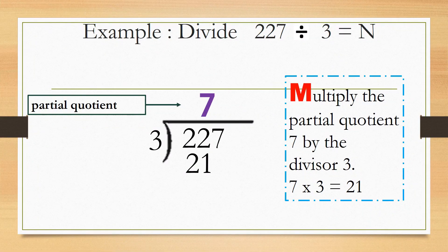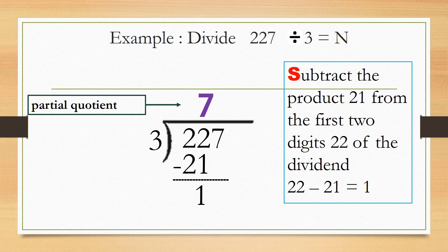So the first partial quotient is 7. Multiply the partial quotient 7 by the divisor 3. 7 times 3 equals 21. Next, subtract the product 21 from the first 2 digits 22 of the dividend. 22 minus 21 equals 1.